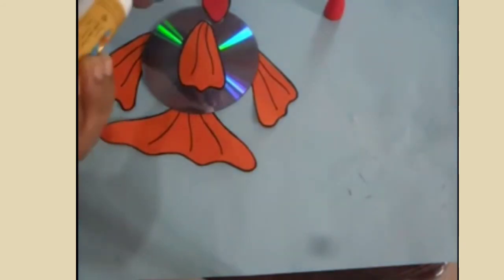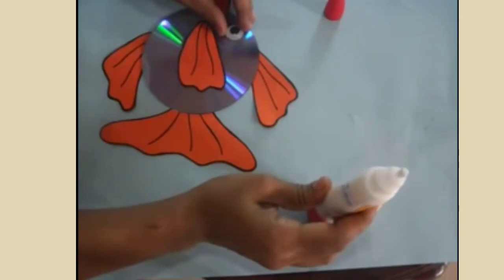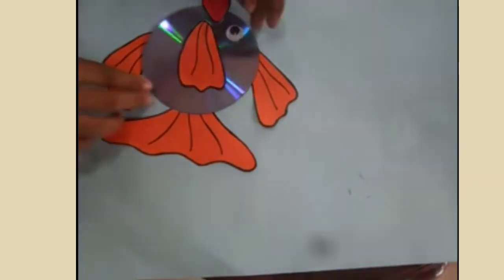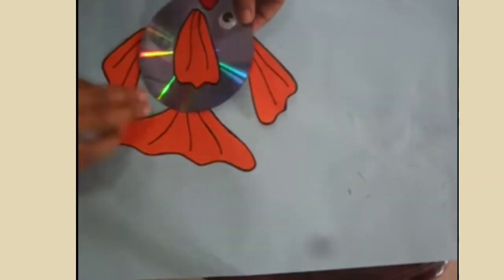This is optional. If you're having the artificial eyes, you can apply them. If you do not have them, you can apply black color paper also. So I'll apply it over here, and there we are. Our goldfish is ready.